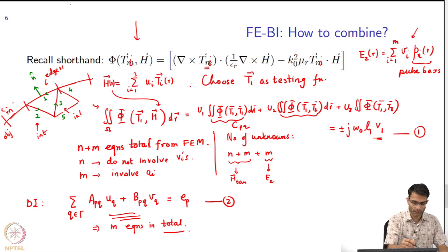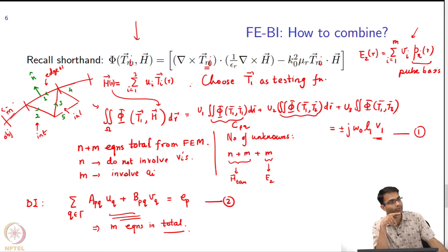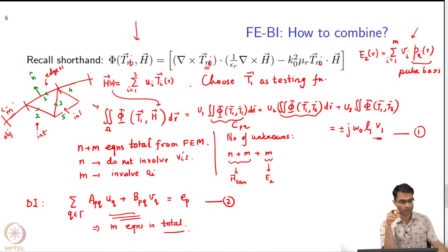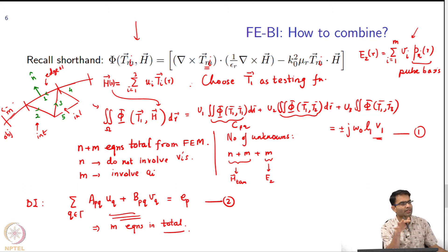When I take this triangle over here, my equation will have u3 something. If I test along edge 3, what all unknowns will appear? Everything that is common to edge 3 will come. So I will get u1, u2, u3, u4, u5 — but no others, they will be 0. That is how it will appear. The second part — interior edges — does not change at all; it is as you do FEM before.